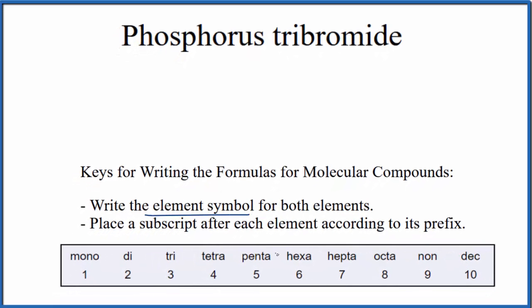First, we'll write the element symbol for each of the elements. So phosphorus, that's P. And then bromide, that's from bromine, that's Br.